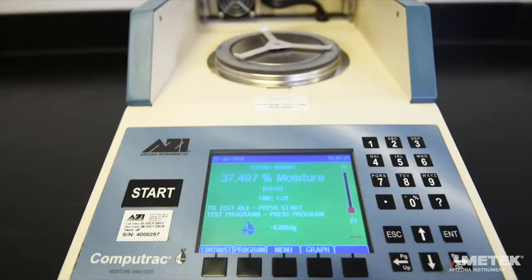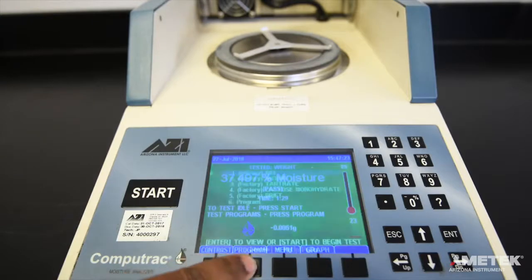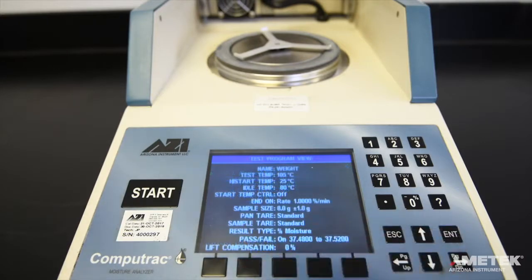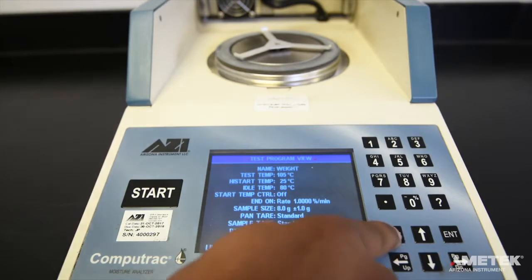From the home screen, press the program button, then use the directional keys to highlight the factory weight program. Press enter to select the weight test, then return to the main screen by pressing escape twice.